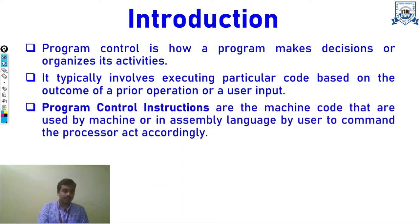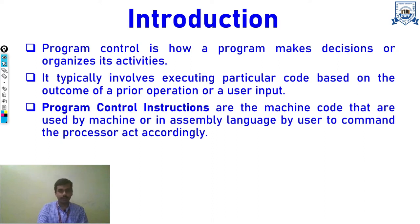For program control we use program control instructions. These instructions are basically machine codes or assembly codes given by users to command the processor to act accordingly. If a user wants to transfer control from one location of instruction execution to another location, they will use program control instructions.